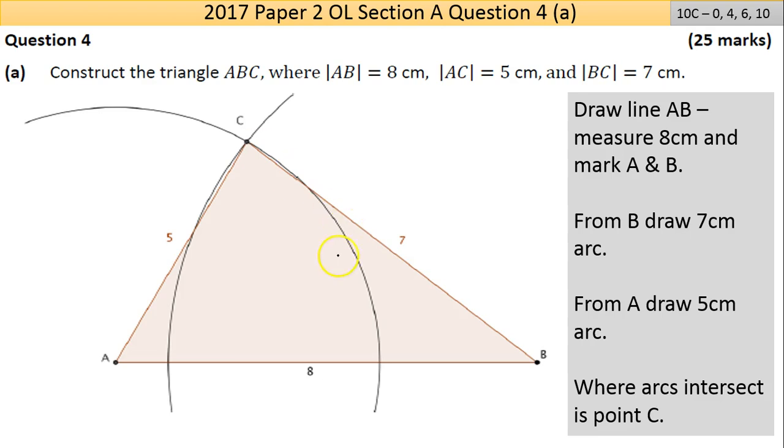Where they meet is the top vertices C. It's pretty straightforward if you know your constructions. If you try to just grab the attempt, it's a 10-mark question, so 0, 4, 6, 10. If you draw any arc, you're going to get some marks. Draw the base and you should hopefully get some marks. Note your construction lines have to be visible.